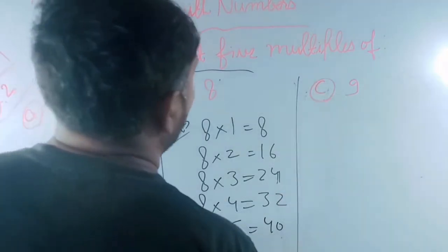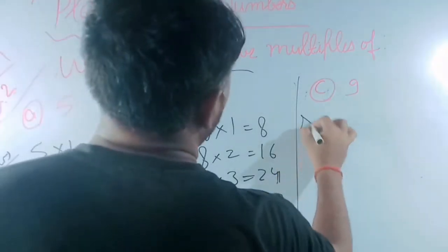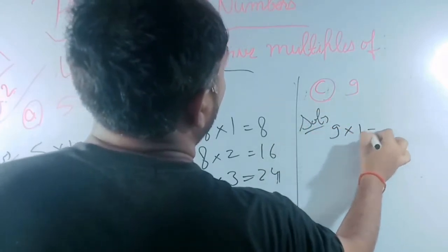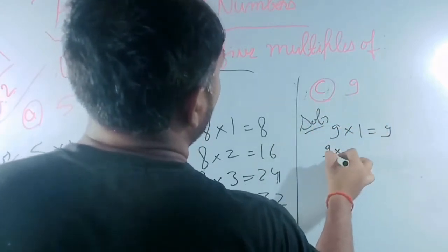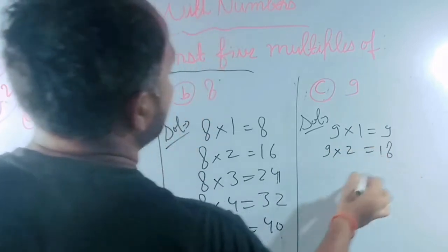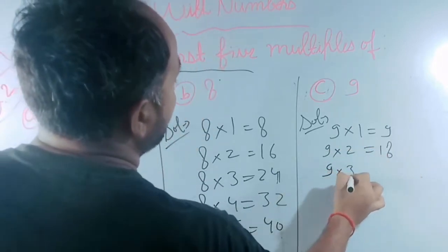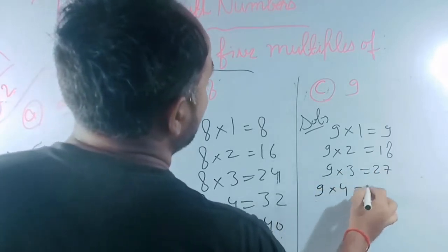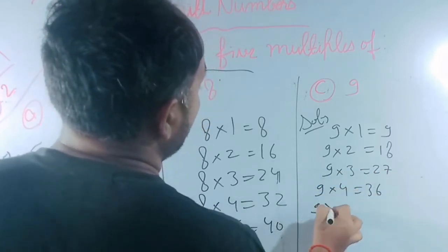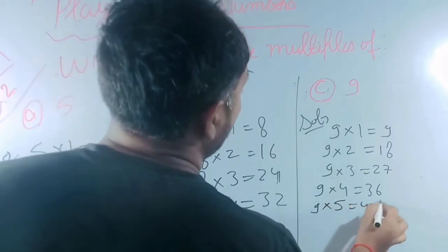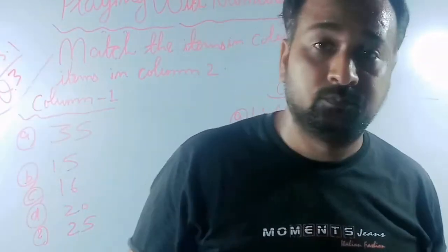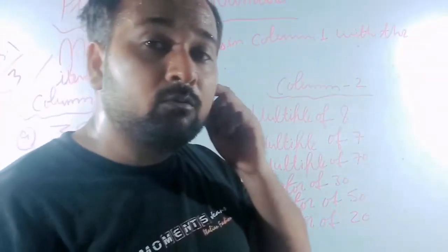Now next one, same method. 9 multiply 1 equals 9, 9 multiply 2 equals 18, 9 multiply 3 equals 27, 9 multiply 4 equals 36, 9 multiply 5 equals 45. This way we have completed this question.